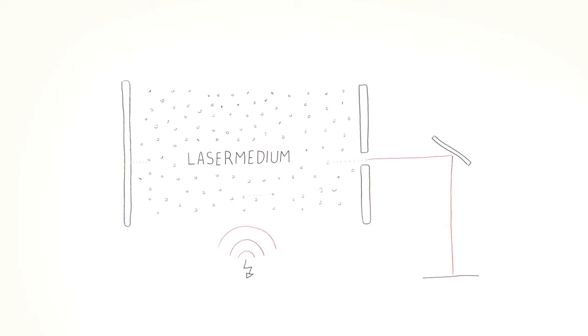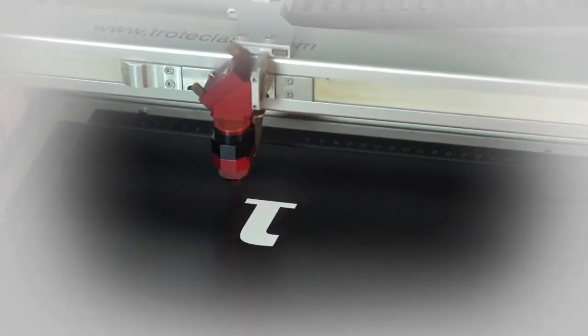This beam can leave the laser through the partially transmissive mirror and is directed onto the material, where it engraves, marks, or cuts the desired motif.